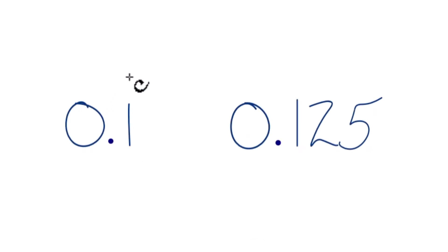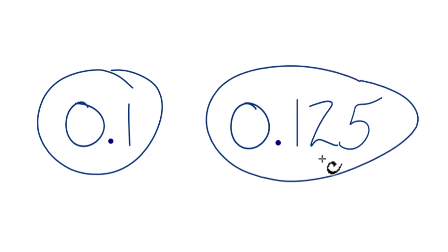Let's take a look at which decimal is larger, 0.1 or 0.125, so which one of these decimals is greater. Here's how we do it.